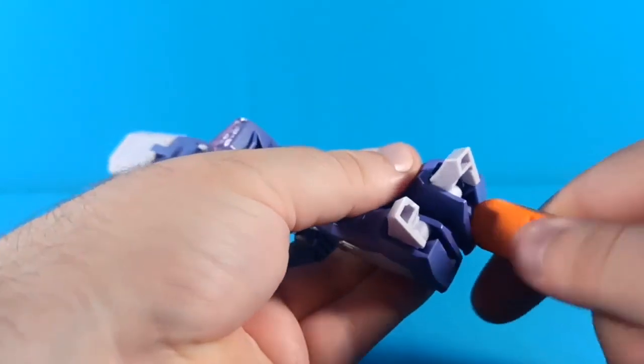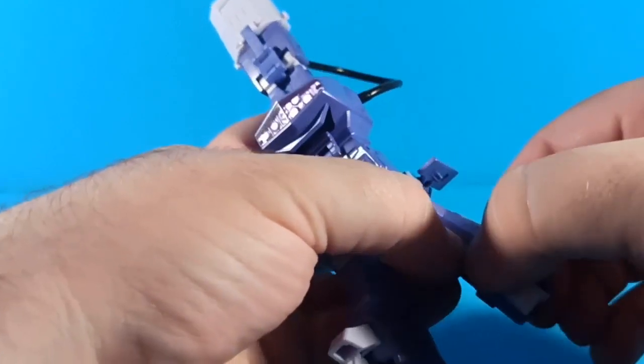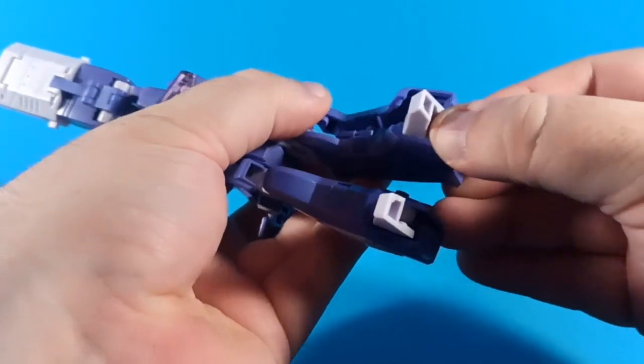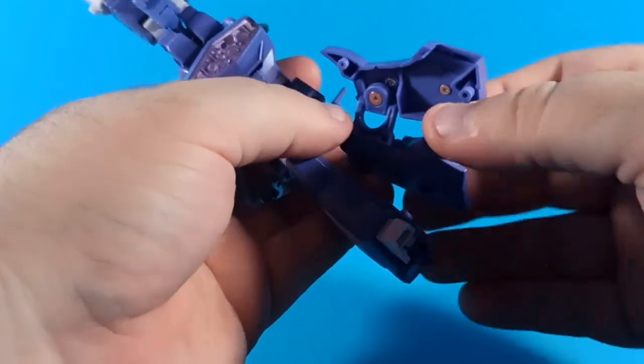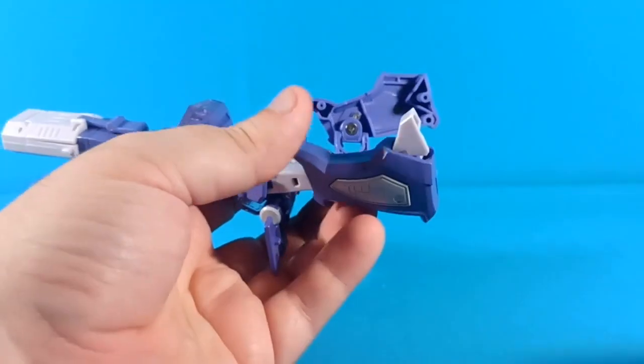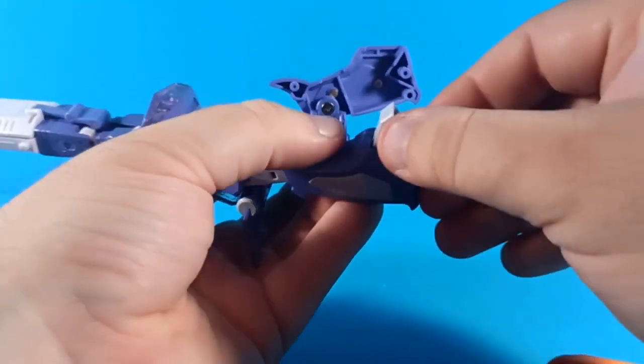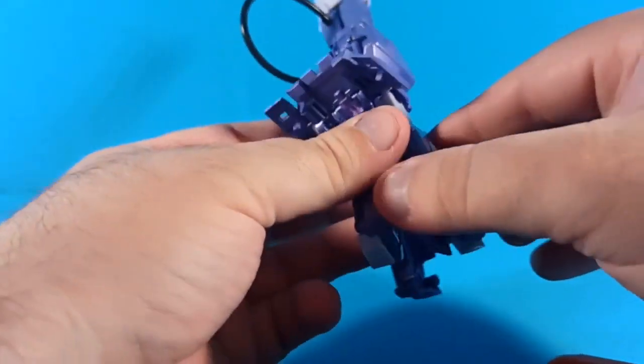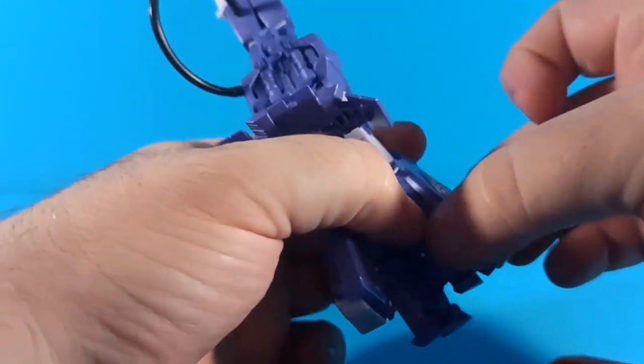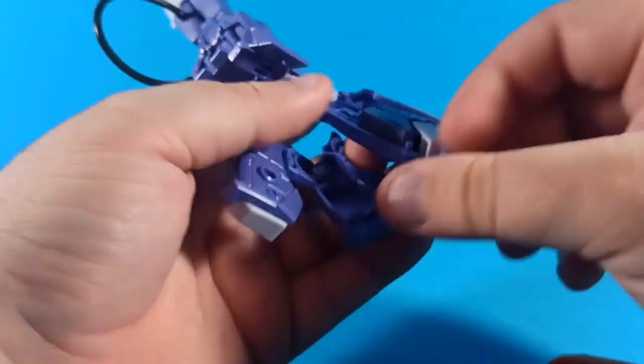And then you just give it a good squeeze and it fits together pretty well. Sometimes I feel like I have fitment issues on this, and sometimes I don't, so I'm not sure exactly what the story with that is. Then you want to come down to his feet and you want to open these up. And then this is going to fold out and around and that will allow you to fold up his toe. We'll do the same for the other side.